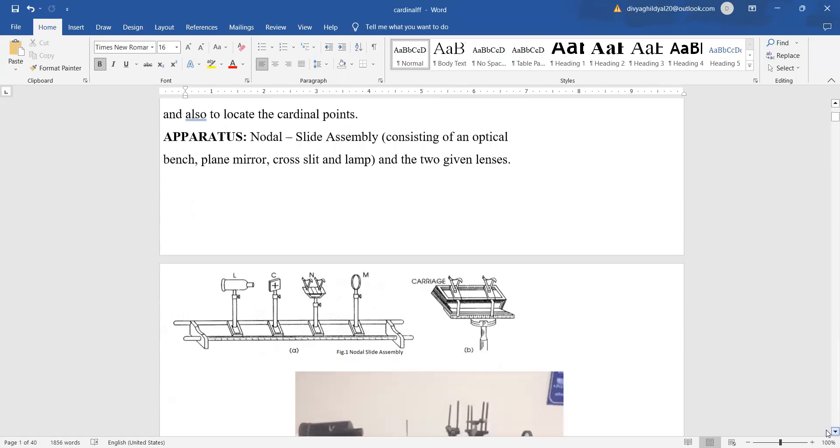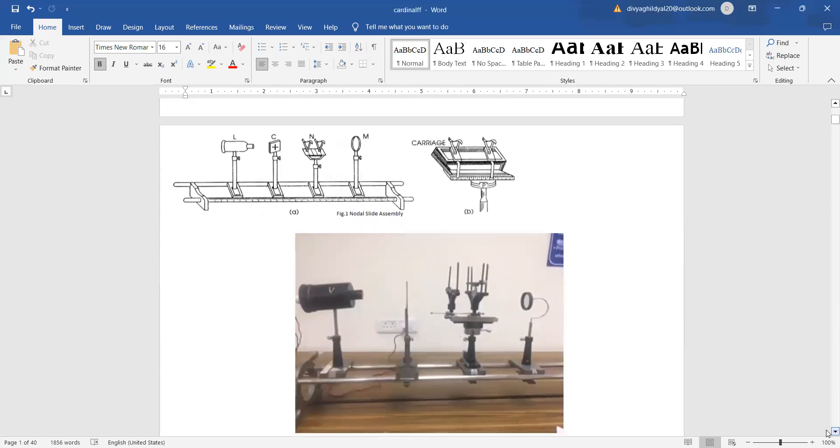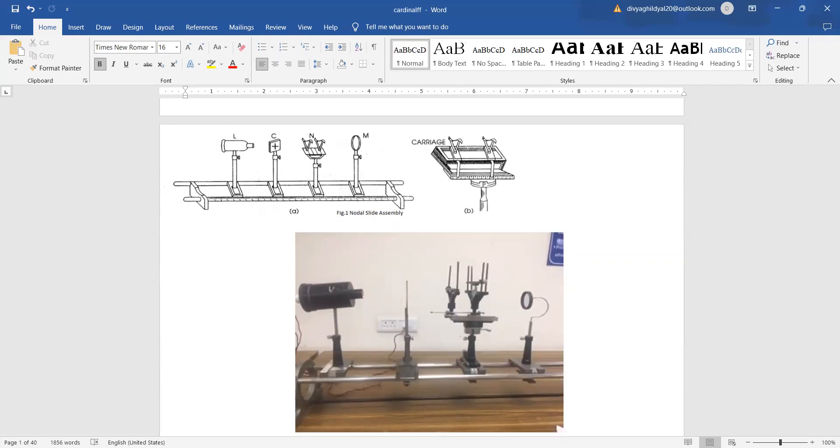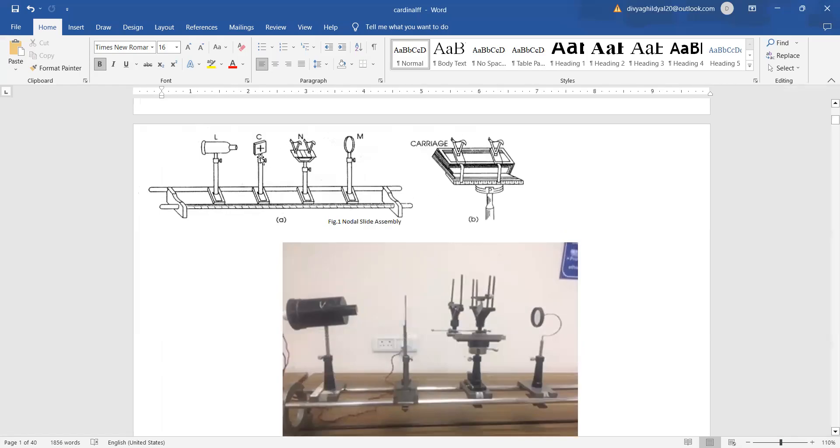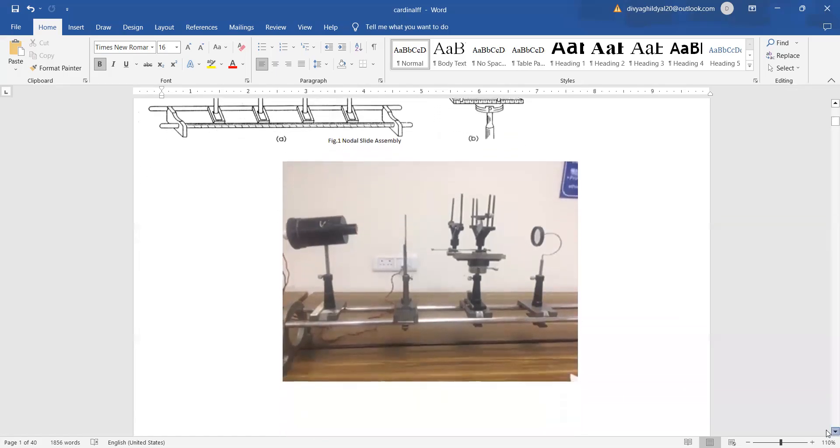The apparatus required includes a nodal slide assembly consisting of an optical bench, plane mirror, cross slit and lamp, and two given lenses. This is what your nodal slide setup looks like in the physics lab. Here is the optical bench, the nodal slide setup, the cross slit, the light source, a simple ordinary bulb, plane mirror, and your cross slit where we will see the image. A meter scale is here from which you will measure the distances and set the distance between the two lenses for the third table.